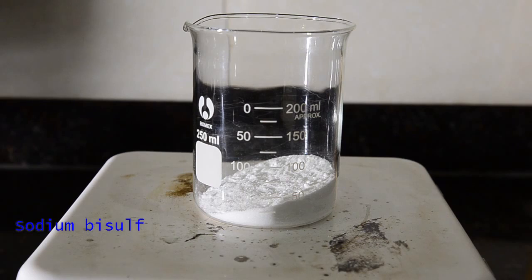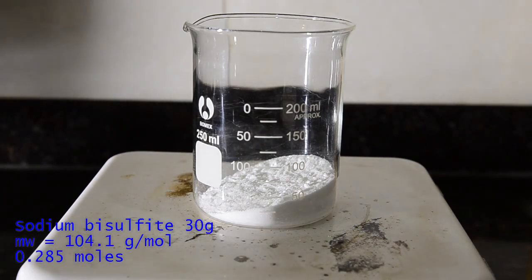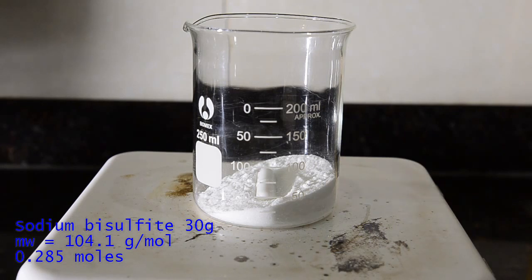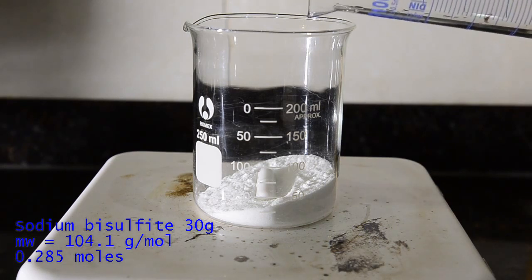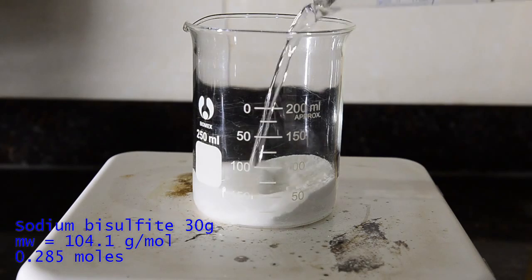First we need to create the bisulfite adduct of benzaldehyde, so weigh out 30 grams of sodium bisulfite. This is more than we need, but the adduct forms better if you use an excess quantity.